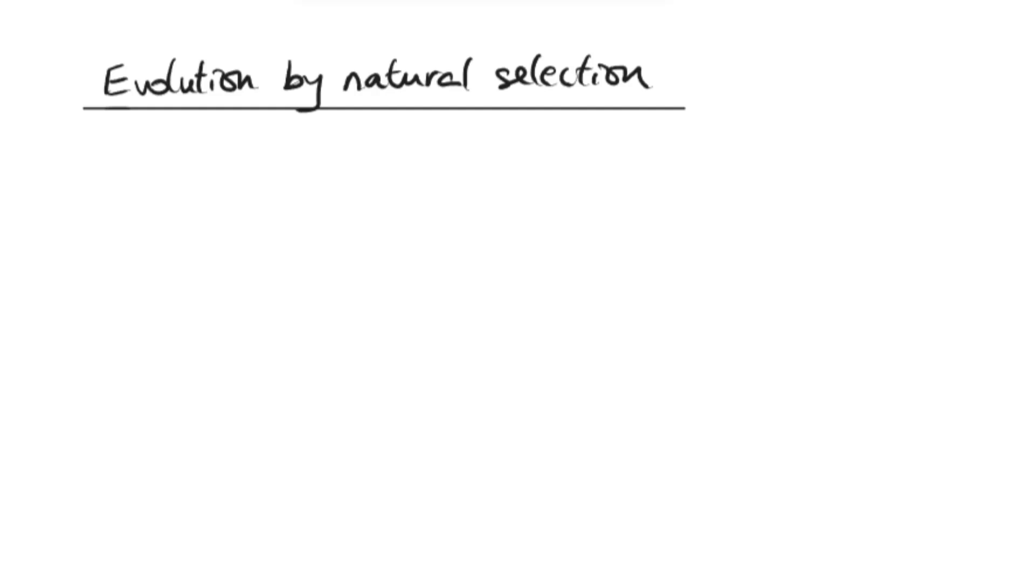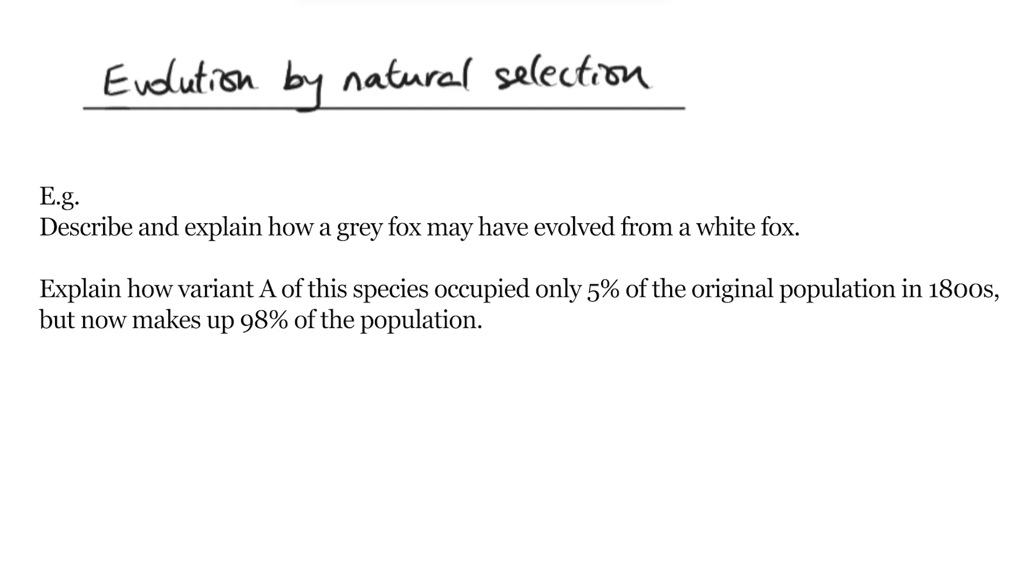It is quite common for you to be asked in an exam question to describe how evolution by natural selection would occur. But what you need to notice is they would never ask you just like that. It will almost always mask and pretend to be something else. They would probably introduce you to a completely new organism you've never heard before, and say something along the lines of how their environment has somehow changed. So you need to spot that that is what the question is asking. They would say something like, suggest how the organism has changed to different species over time. So you must know it's always about natural selection.